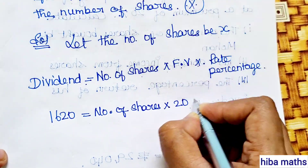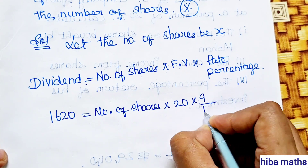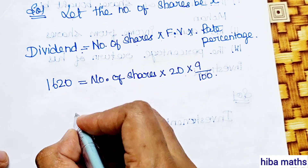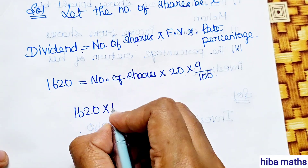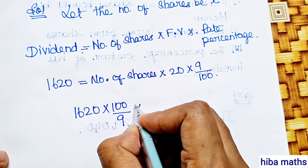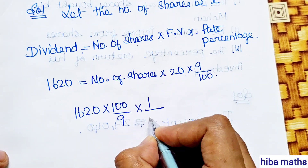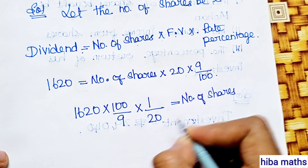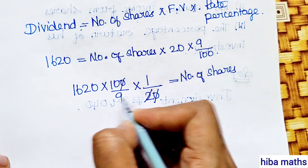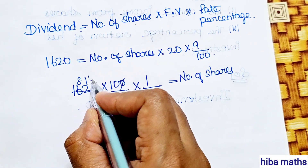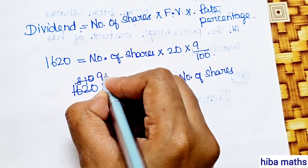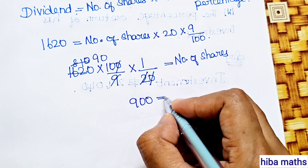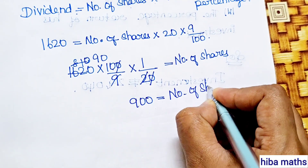Rate of percentage is 9%, so 9 by 100. Substituting: 1620 equals X into 100 into 9 by 100, which gives 1620 into 100 divided by 20 into 9. After cancelling, we get number of shares equal to 900.